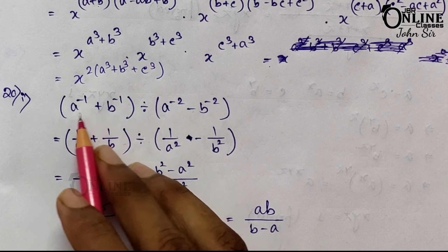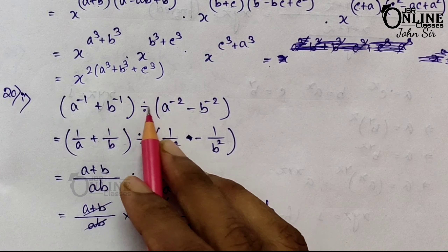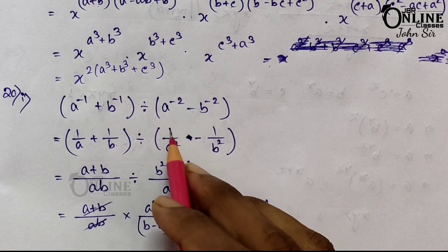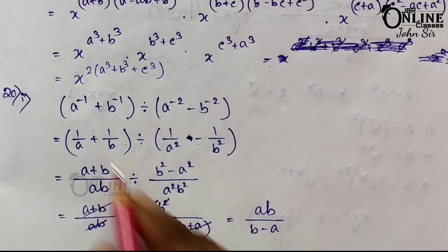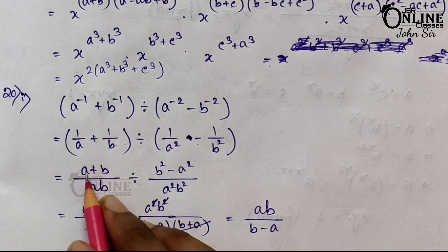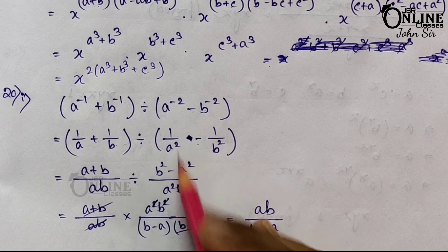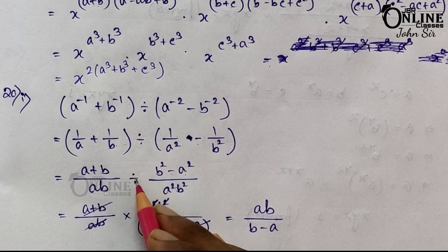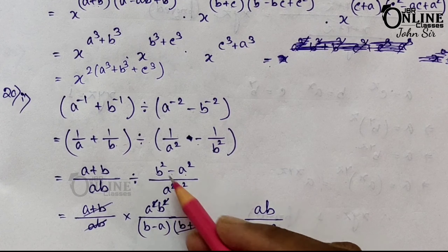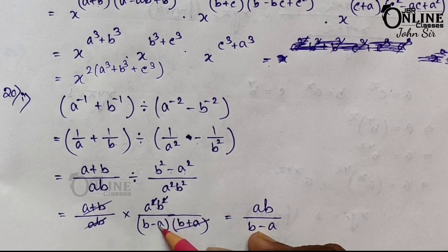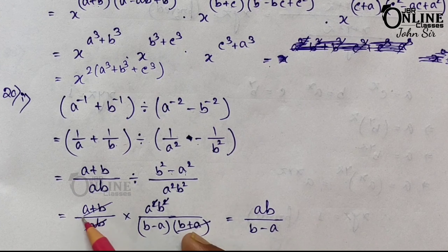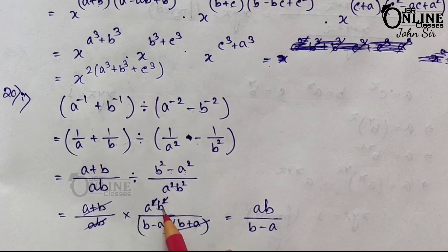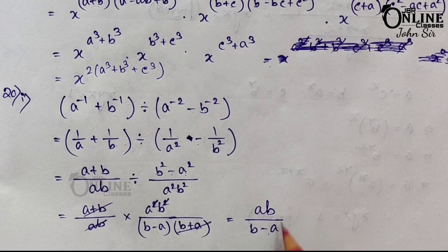Sum 21.1: (a^(−1) + b^(−1)) ÷ (a^(−2) − b^(−2)). Rewrite as (1/a + 1/b) ÷ (1/a² − 1/b²). LCM for numerator gives (a+b)/ab; denominator gives (b²−a²)/(a²b²) = (b−a)(b+a)/(a²b²). Dividing: [(a+b)/ab] × [a²b²/(b+a)(b−a)]. Cancel (a+b) and ab, leaving ab/(b−a).